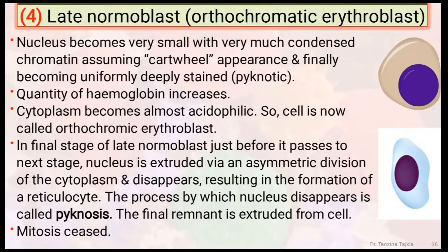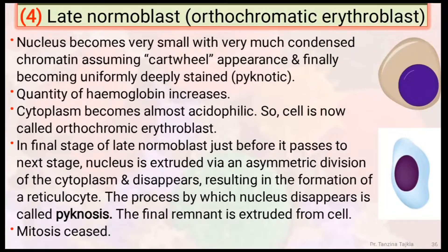Number four: late normoblast or orthochromatic erythroblast. Here, the nucleus becomes very small with very much condensed chromatin in a cartwheel appearance, finally becoming uniformly deeply stained. The quantity of hemoglobin increases and the cytoplasm becomes almost acidophilic, so the cell is now called orthochromatic erythroblast. In the final stage of late normoblast, just before it passes to the next stage, the nucleus is extruded via an asymmetric division of cytoplasm and disappears, resulting in the formation of reticulocyte. This process by which the nucleus disappears is called pycnosis, and mitosis ceases.